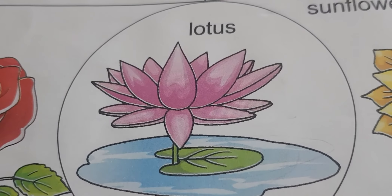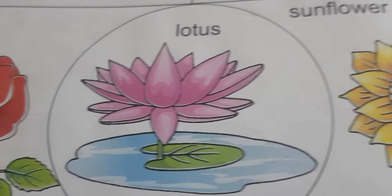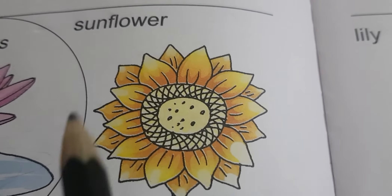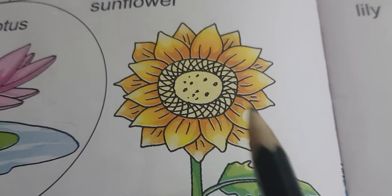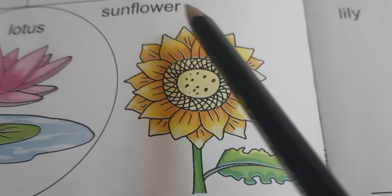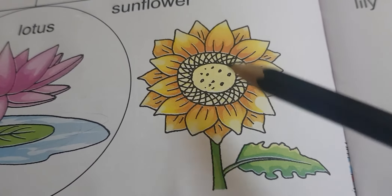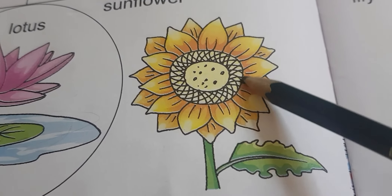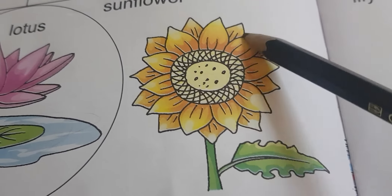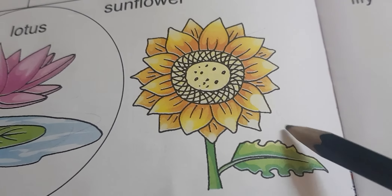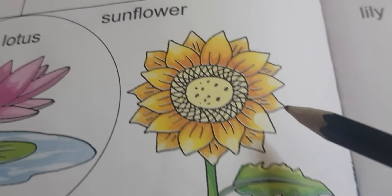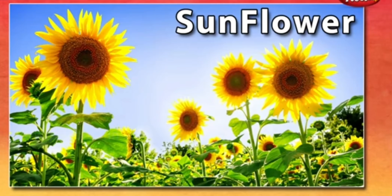Next flower is sunflower. As you can see, sunflower sun ki tarah lagra hai. In the center, it looks like the sun, and the rays-like petals surround it. It is yellow in color. Sunflower always faces the sun — sunflower ka jo face hota hai, woh hamesha sun ke taraf hota hai.